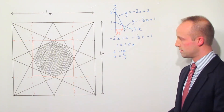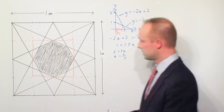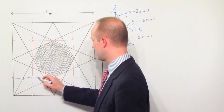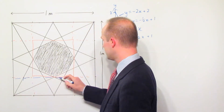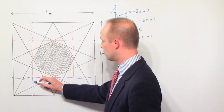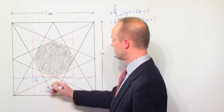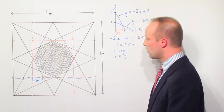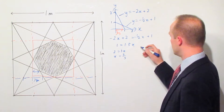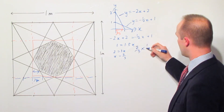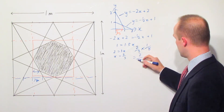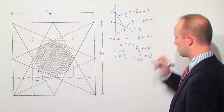Two thirds of what though? Well, looking at this we know there's 1 there, 1 there, 1 there, and 1 there. All these equal distances — and there are 8 of them — mean that distance there is one eighth of a metre. So we know that this distance here is two thirds of that one eighth, which gives us two thirds multiplied by one eighth, equalling two twenty-fourths, which equals one twelfth.